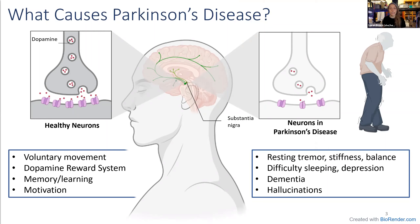This takes place in a part of the brain called the substantia nigra. In Parkinson's disease, the neurons that transmit dopamine begin to die, causing resting tremor, stiffness, and disrupted sleep. Often, depression and hallucinations can be exacerbated by current pharmaceutical treatments.